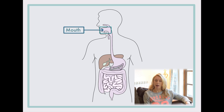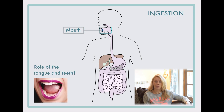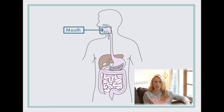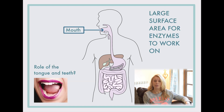We're going to start with the mouth. This is where you place food — the process of placing food into the mouth to be processed is known as ingestion. The teeth start to break up the food into smaller parts, which is really important because it provides a large surface area for chemicals known as enzymes to break down or digest the food so that we can absorb it into our bloodstream.